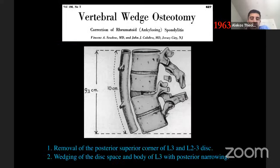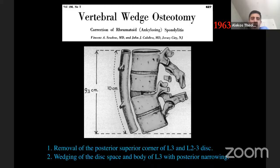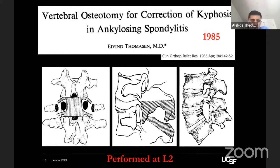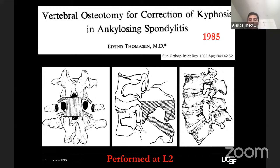That led others to find a safer approach. Scudese in 1963 performed what I would call a mini PSO, taking off the posterior superior corner of L3 and the L2-3 disc, creating some lordosis through wedging. However, the correction wasn't robust. This was followed by Thomason's classic 1985 groundbreaking article in Spine, describing his approach at L2: removal of the posterior elements, complete facetectomies above and below, removal of the pedicles and transverse processes, taking a wedge of bone from the back.